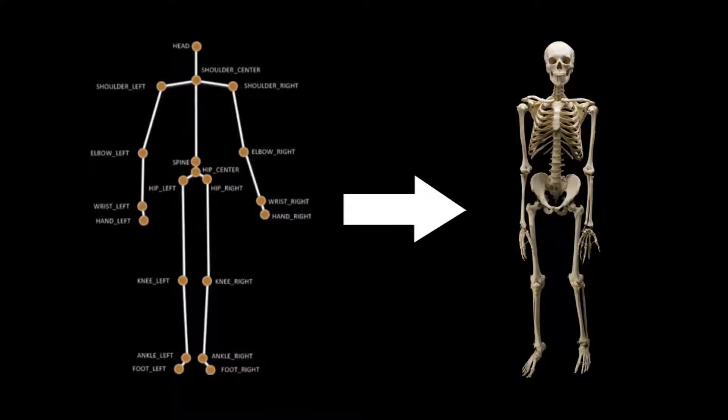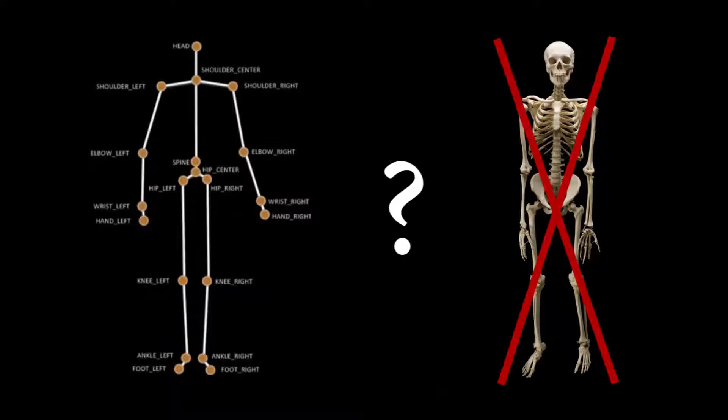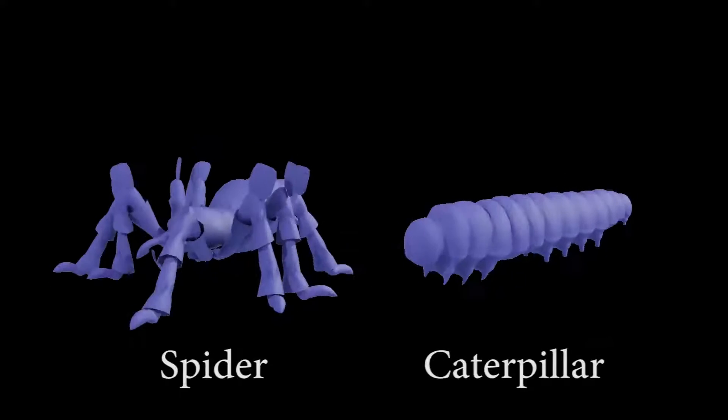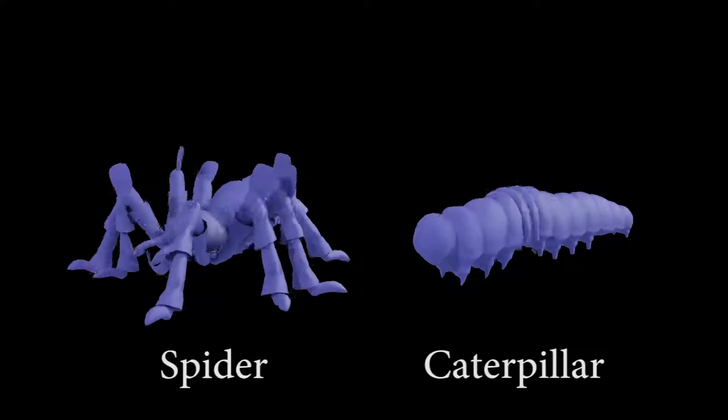However, many characters which we may wish to puppet do not have humanoid skeletons. In fact, many characters are not vertebrates at all and many have exoskeletons with very different morphology or may have soft bodies with skin for which even a proxy skeleton is difficult to define.